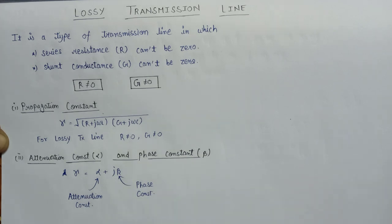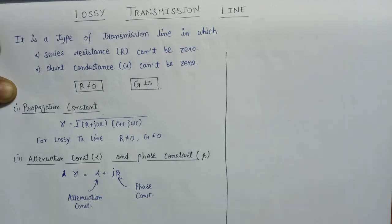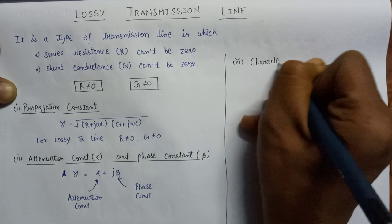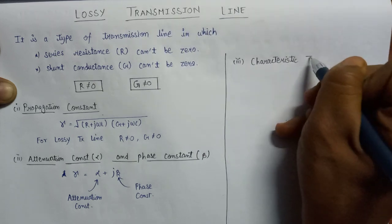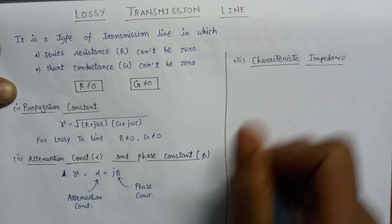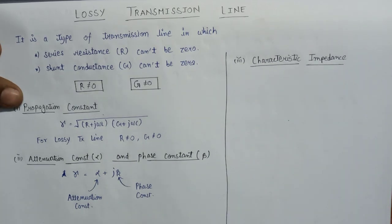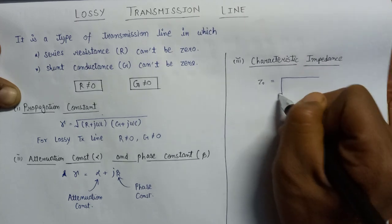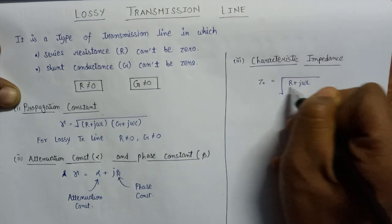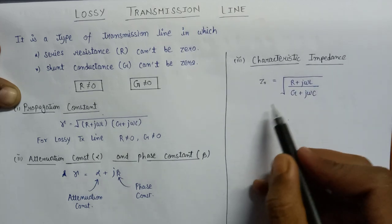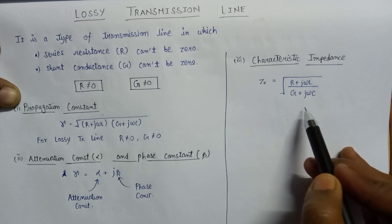Now we have to discuss about the characteristic impedance, which is denoted by Z naught. The expression for the characteristic impedance Z naught is equal to the square root of (R plus j omega L) over (G plus j omega C). This is the expression for characteristic impedance in case of lossy transmission line.